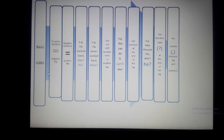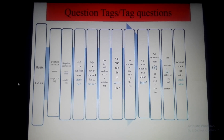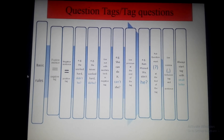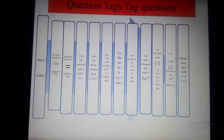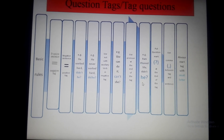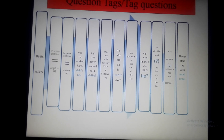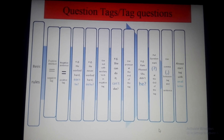The next rule: always start the tag with a small letter. Keep in mind, you have to use a small letter when writing a tag. For example, 'Ram found Sita, didn't he' — 'didn't' starts with a small letter 'd.' You don't have to use a capital letter at the start of the tag.